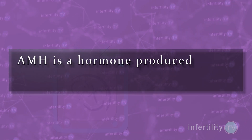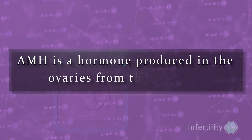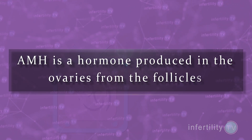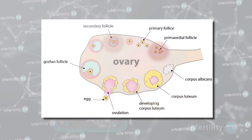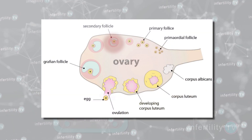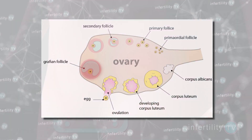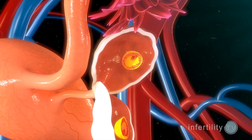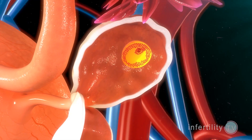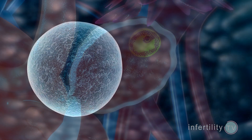Low AMH indicates ovarian reserve. AMH is a hormone produced in the ovaries from the follicles. Follicles are the tiny cysts which contain the eggs. The more eggs there are, the higher your AMH level will be.